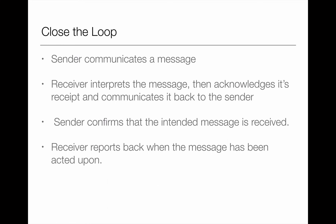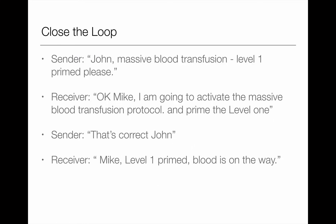In closed loop communication, the sender communicates the message, the receiver interprets the message, the sender confirms the intended message is received, and then the receiver reports back once the task is done. An example: 'John, massive blood transfusion level one prime please.' John, one of the best nurses, would say 'Okay Mike, I'm going to activate the massive transfusion protocol and prime the level one.' The TTL Mike would say 'That's great, thanks John.' And subsequently the nurse reports: 'Mike, level one is primed, blood is on the way.' Communication of that nature is perfect.